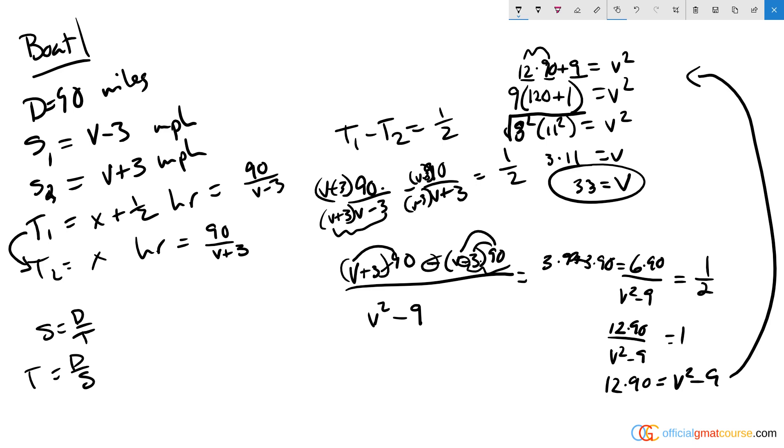If 33 equals v and we're looking for x, and x is the number of hours it takes to travel downstream at the faster rate, then x equals 90 over 33 plus 3, which is 90 over 36. If we cross-cancel, that becomes 10 over 4, which is 5 over 2, which is 2.5. Our answer is answer choice A.